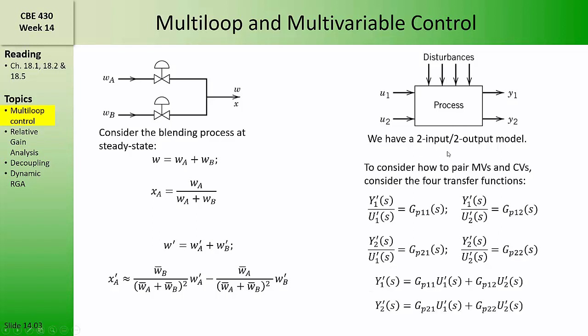In general, for a two-input, two-output model, there are four process transfer functions. Each of the two manipulated variables, U1 and U2, may both affect Y1, and each of the two manipulated variables may also both affect Y2. We'll call these four process transfer functions GP11, GP12, GP21, and GP22.